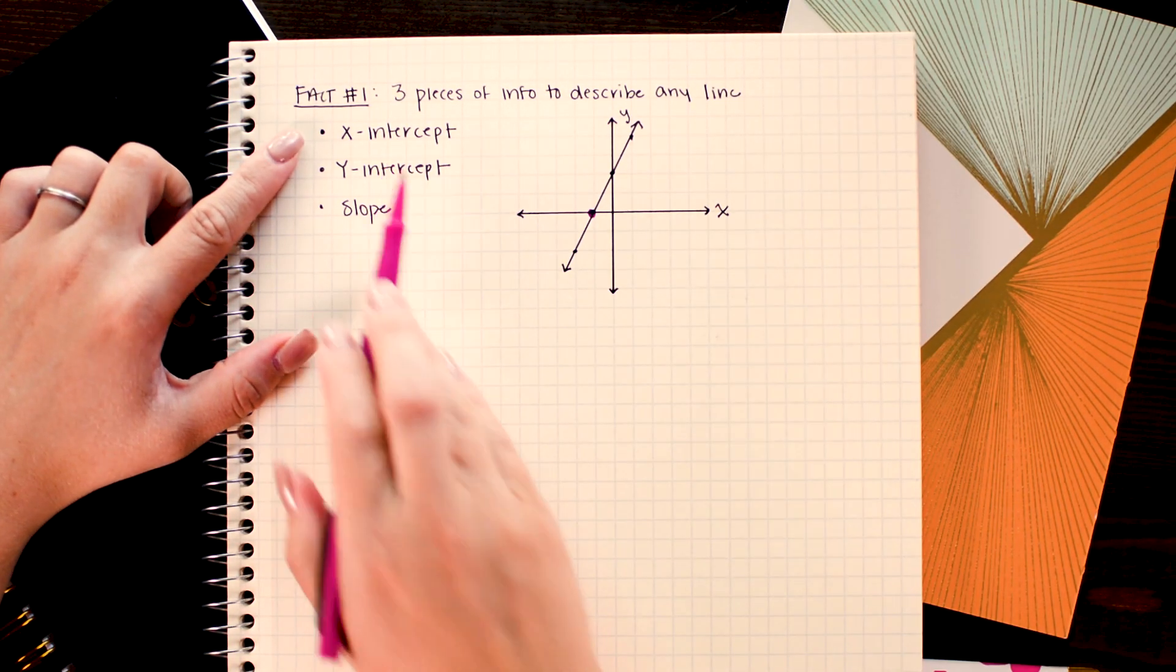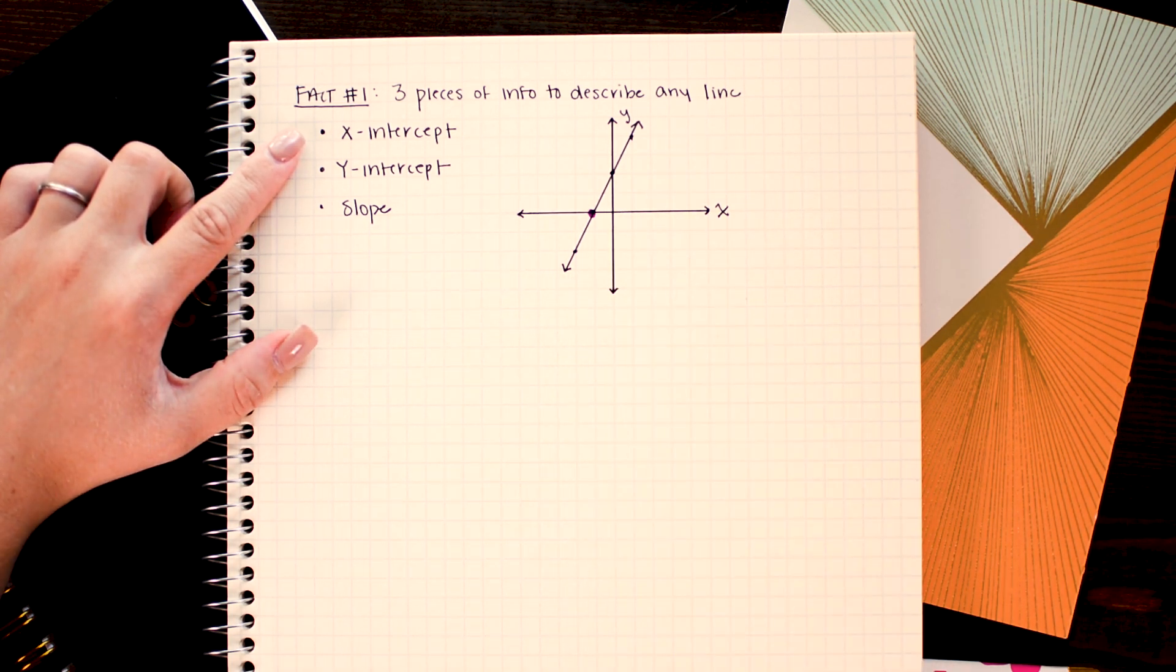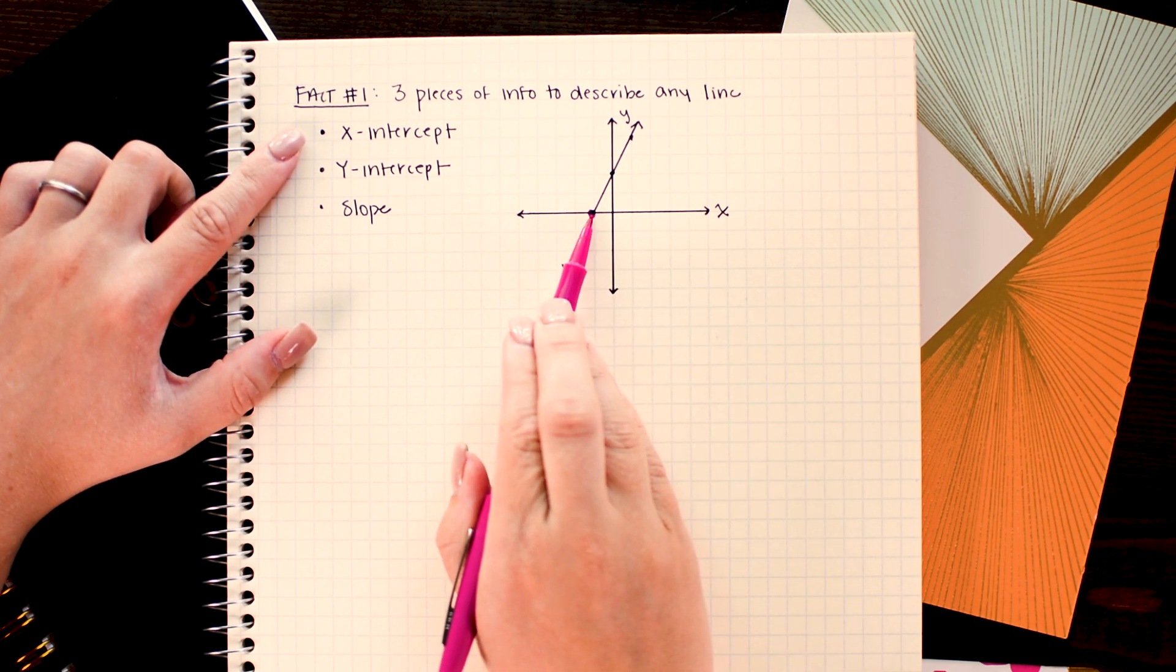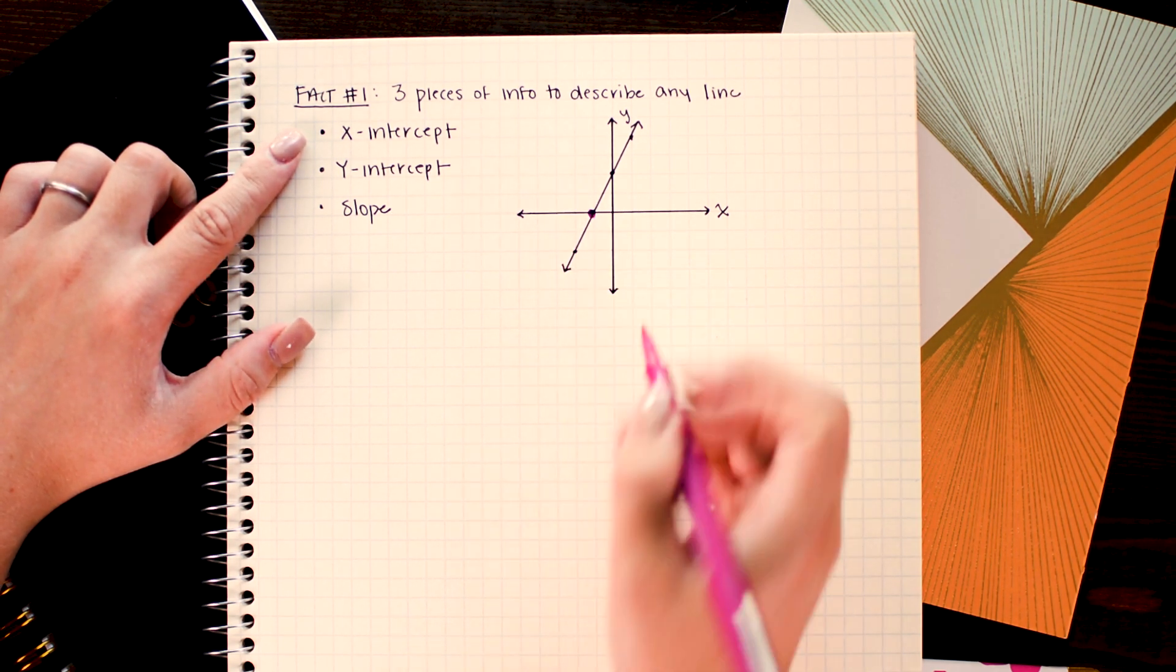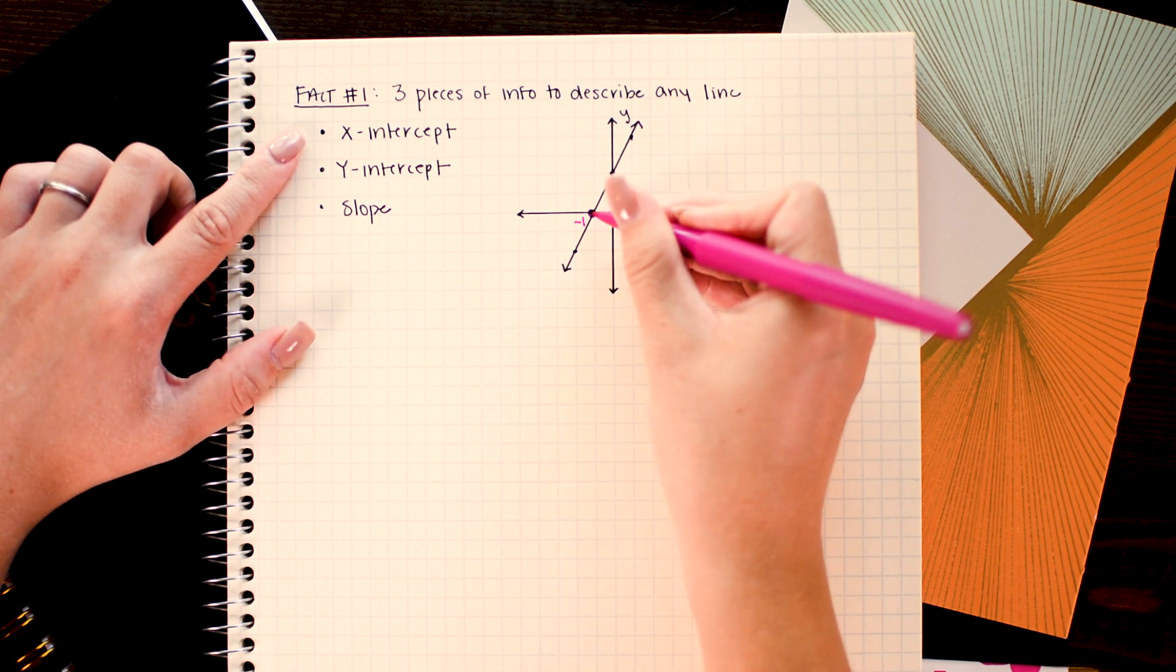The x-intercept is where our line crosses the x-axis. So with this line it crosses the x-axis one unit to the left. So that's at negative one. We would write that as the point negative one, zero.